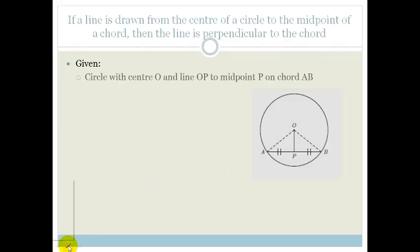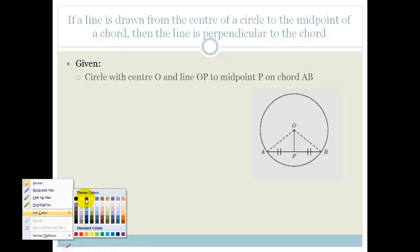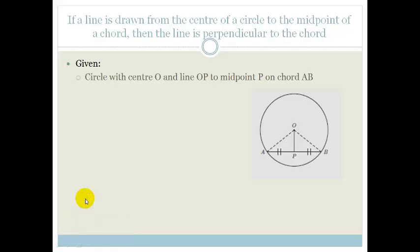The statement is: if a line is drawn from the center of a circle to the midpoint of a chord, then the line is perpendicular to the chord. So if a line is drawn from the center of the circle to the midpoint of a chord, then we said that line is perpendicular to the chord.